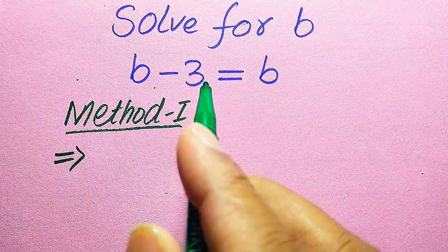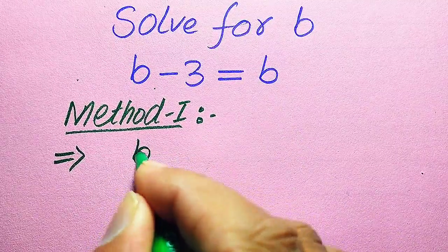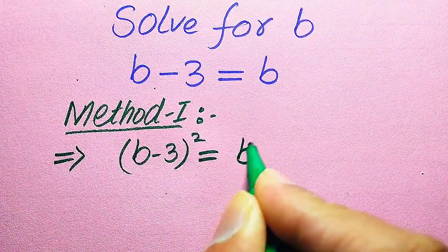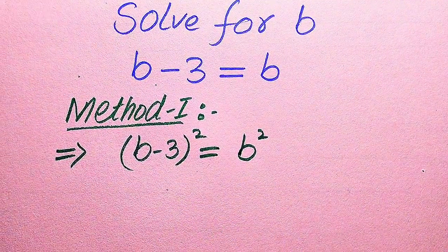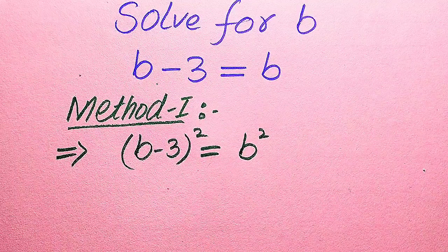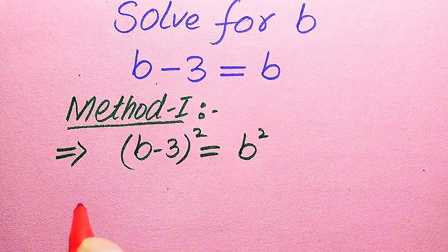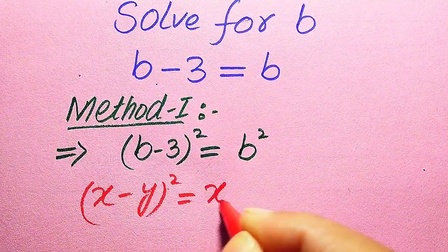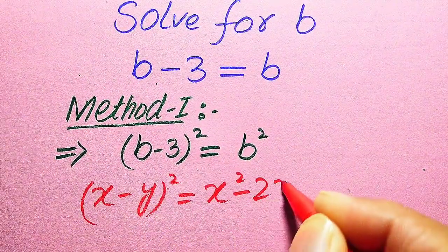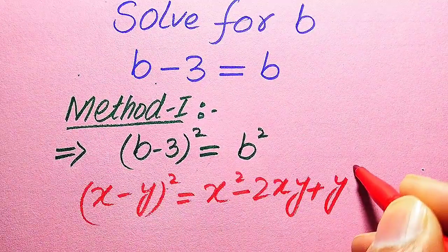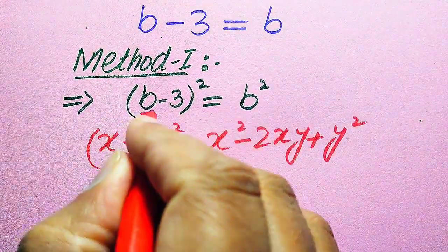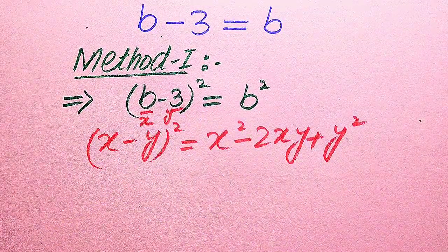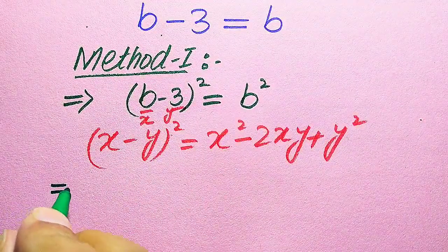In Method 1, we need to take squaring on both sides. When we square both sides it is written as (b − 3)² = b². Here we use the algebraic formula: (x − y)² = x² − 2xy + y². Here x corresponds to b and y corresponds to 3.